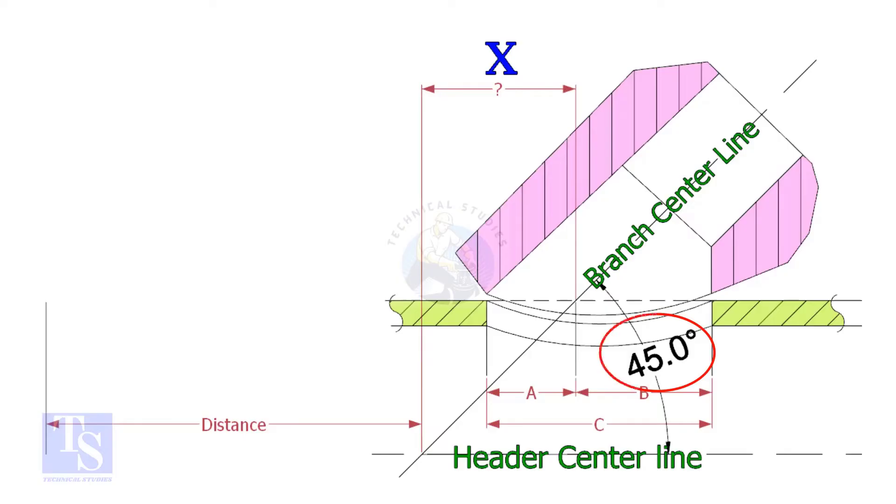If the including angle is 45 degrees, the value of X will always be half OD of the header. Suppose the OD of the header is 400 millimeters, then the value of X will be 200 millimeters.